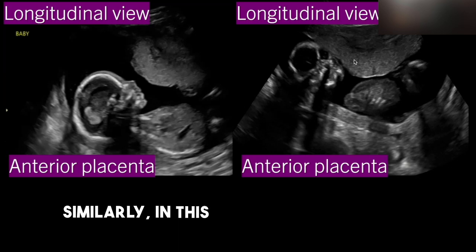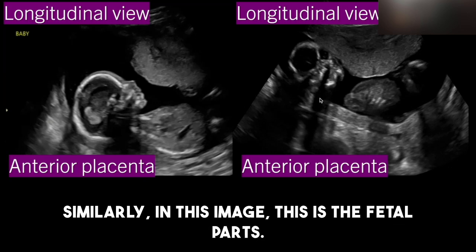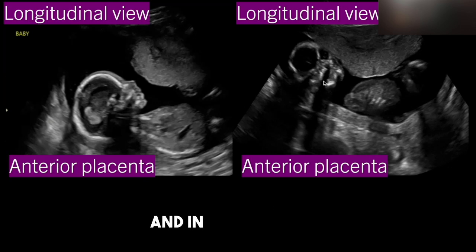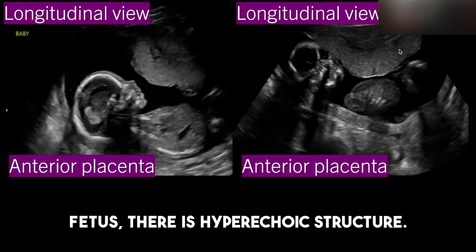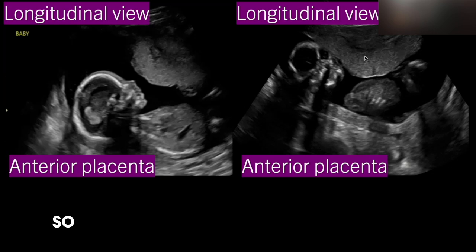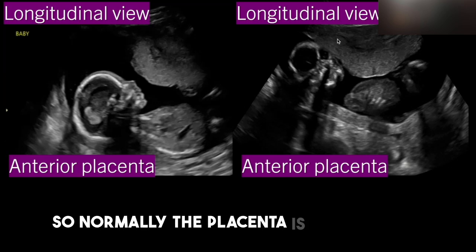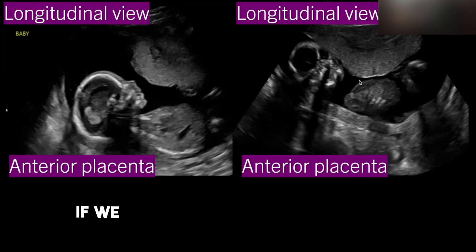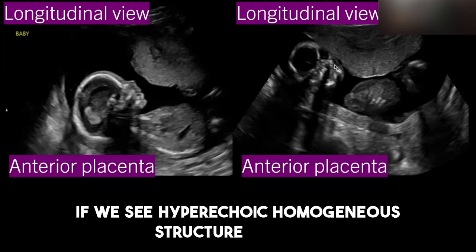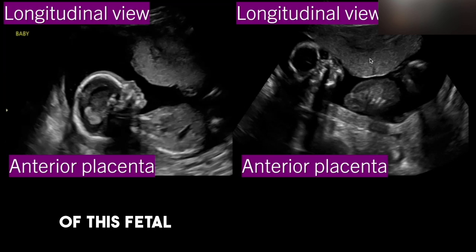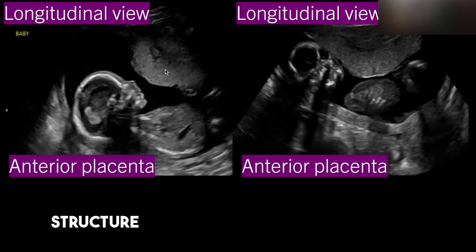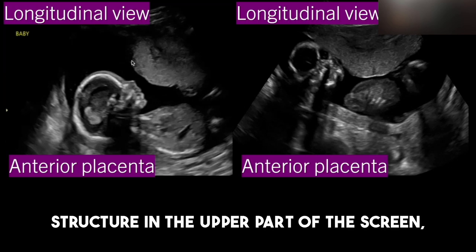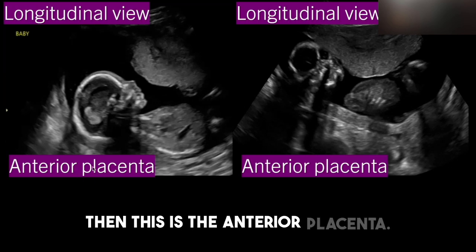Similarly, in this image, this is the fetal parts and in front of this fetus there is a hyperechoic structure. So normally, the placenta is hyperechoic. If we see a hyperechoic homogenous structure in front of the fetal part, if we see a hyperechoic structure in the upper part of the screen, then this is the anterior placenta.